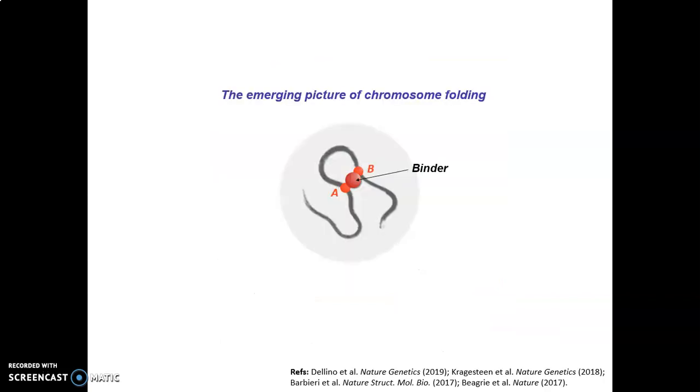The emerging picture of chromosome folding, in which we gave some relevant contributions in the last years, is the following. Consider two sites, A and B, on a chromosome, for instance, a gene and its regulator. In our view, these sites come in close spatial proximity because there is a particle, technically called a binder, which mediates the interactions between A and B.